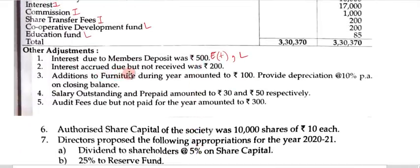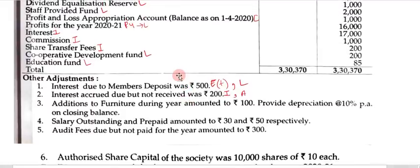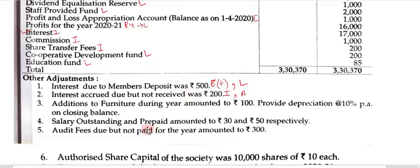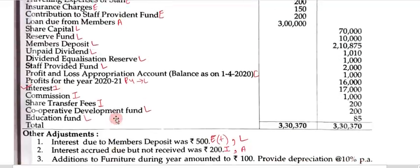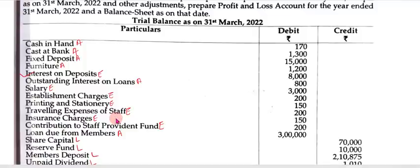Adjustment 2: interest accrued due but not received was Rs. 200. This also has two effects — one will come in the income side and the second will come in the asset side under interest accrued. Adjustment 3: addition to furniture during the year amounted to Rs. 100, and depreciation is provided at 10% per annum on the closing balance. Furniture in the trial balance is Rs. 1,200 but actual cost is Rs. 1,100 since Rs. 100 was added during the year.